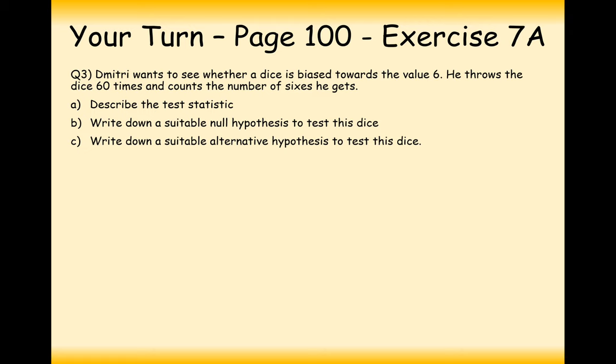Alright then, so hopefully that was an easy one for you then. So question 3 here. Dimitri wants to see whether a dice is biased towards the value of a 6. He throws the dice 60 times and counts the number of 6s he gets. Describe the test statistic. So this is the observed amount of 6s out of 60.